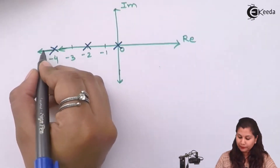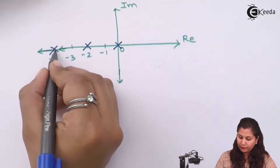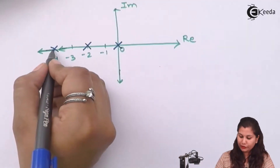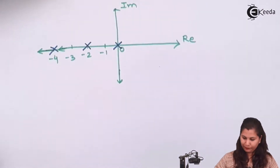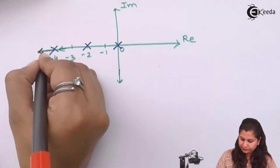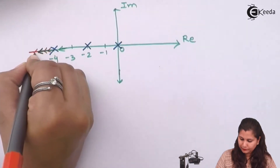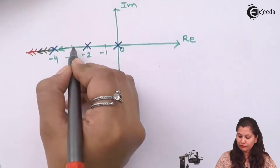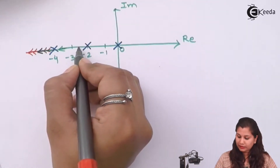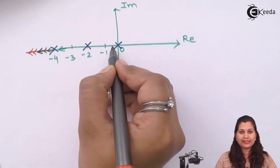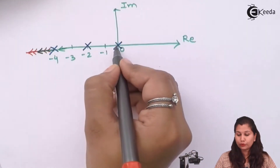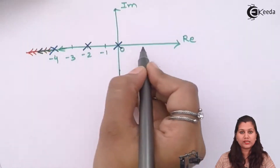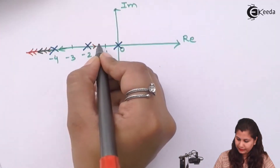Now again take points here. For this point the number of poles on the right hand side is 3, which is an odd number, so the direction of root locus will be towards infinity. Now for this minus 2, if we take a point here, then the number of poles on the right hand side will be 2, which is an even number. So the direction of root locus will be towards infinity.